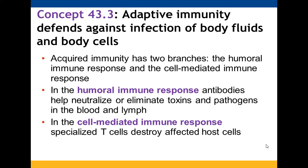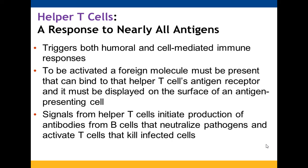Adaptive immunity defends against both body fluids and body cells. The humoral immune response uses antibodies from B-cells to identify and neutralize toxins and pathogens in blood and lymph, making them recognizable for phagocytic cells. The cell-mediated response uses T-cells to destroy host cells that have been infected. Helper T-cells give T-cells a role in both humoral and cell-mediated immune responses.